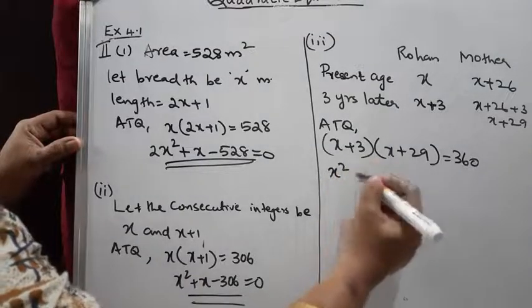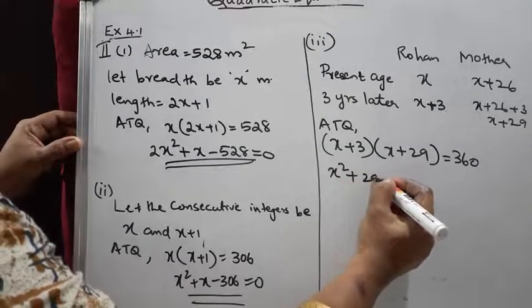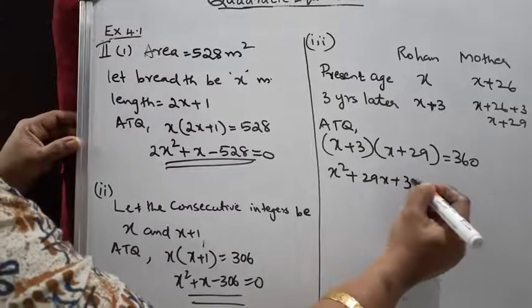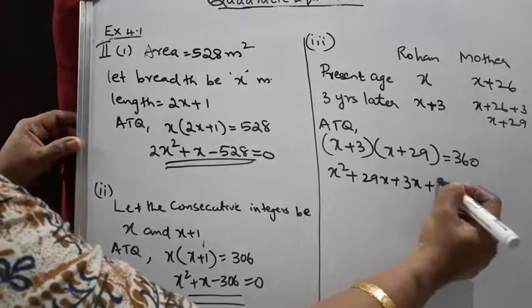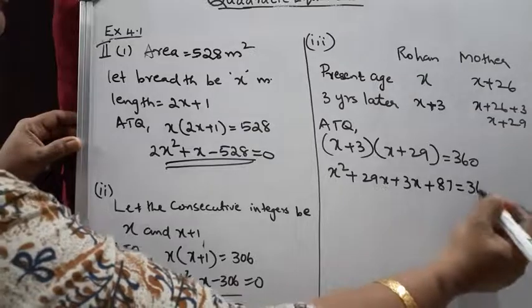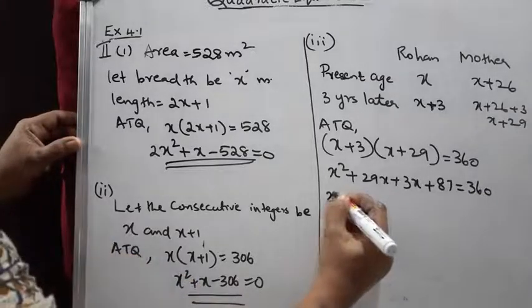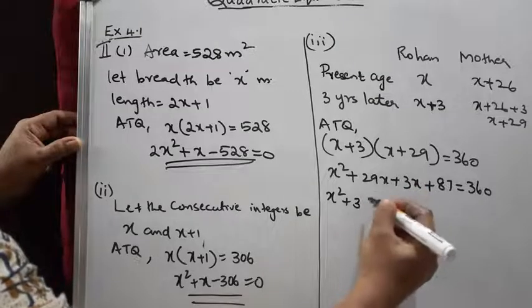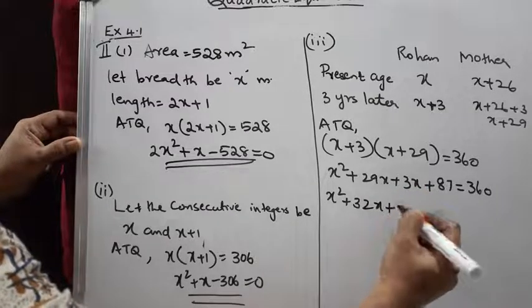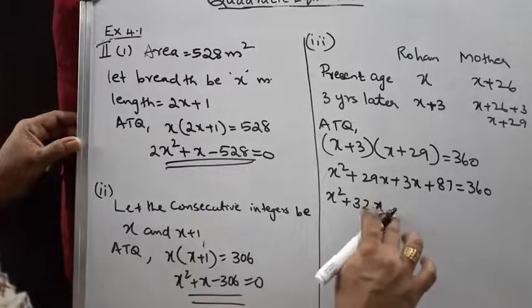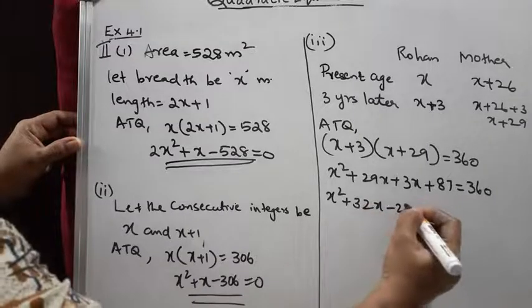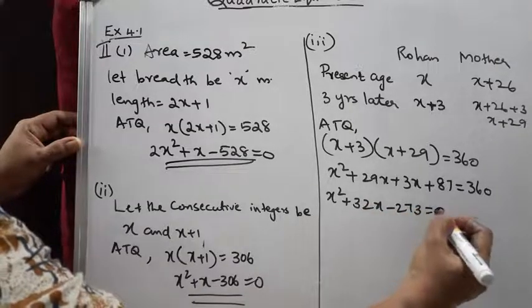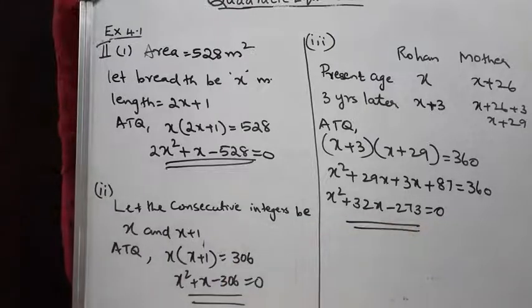Multiplying out: x² + 29x + 3x + 87 = 360, which gives x² + 32x + 87 − 360 = 0, so x² + 32x − 273 = 0. This is the quadratic equation we needed to obtain. Third question is complete.